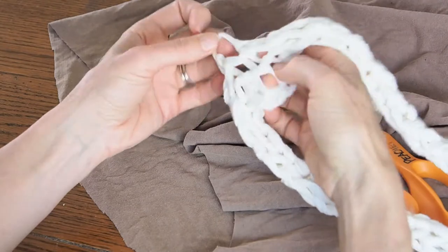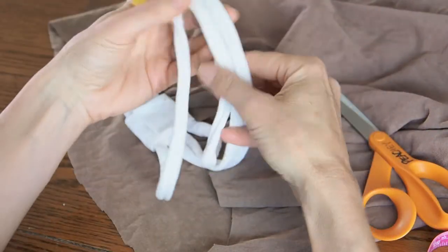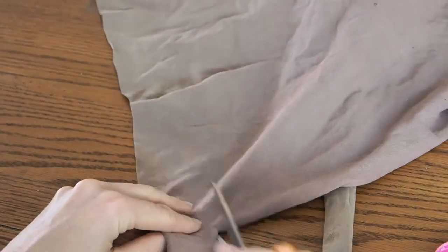Now when it comes to the finger knit jump ropes, we use a thinner yarn and also for the headbands. But for this one we're going to use it for braided jump ropes and we'll cut a 2 inch yarn.